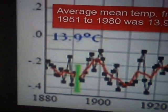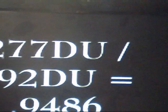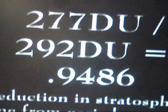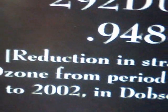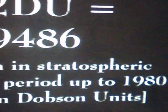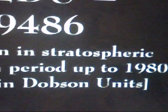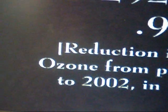You can see, clear back into the 1800s, we've gradually increased. And here you have the mathematics of it: 277 Dobson units divided by 292 equals 0.9486, which is how much the ozone has reduced since that 1951 to 1980 average.